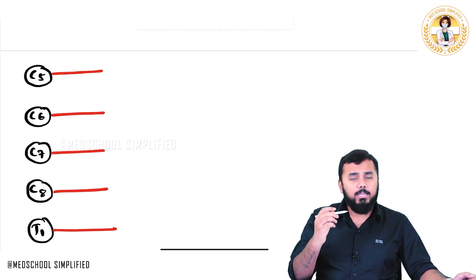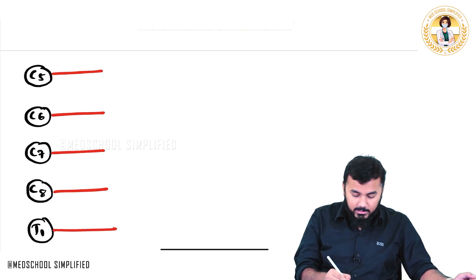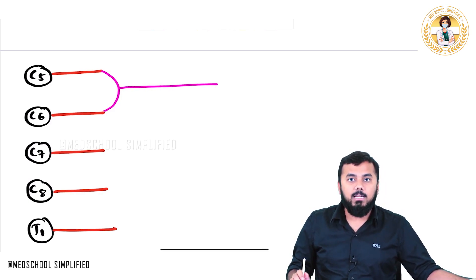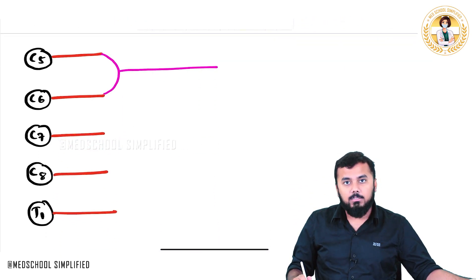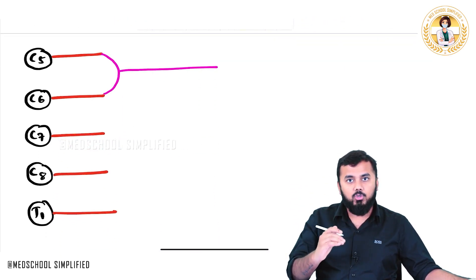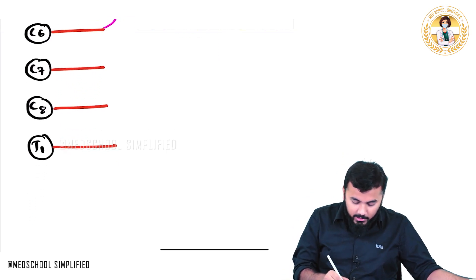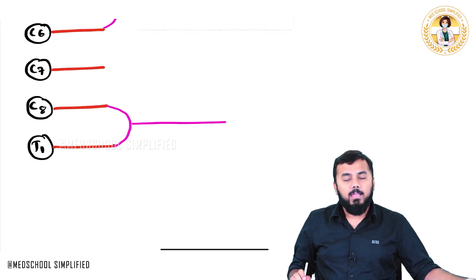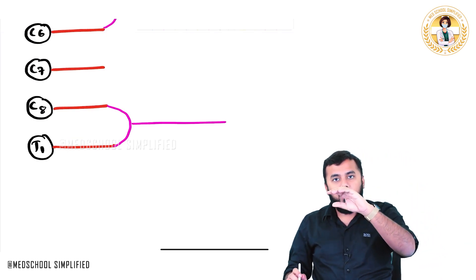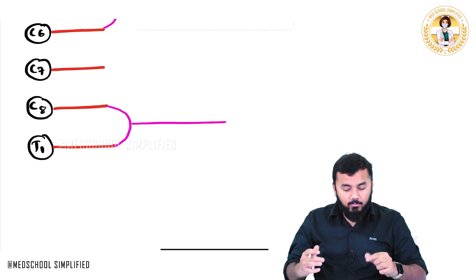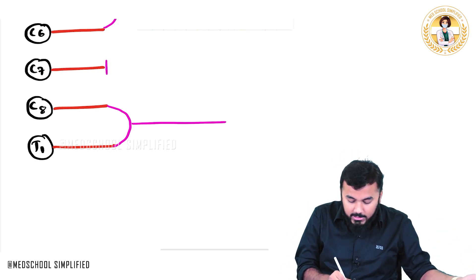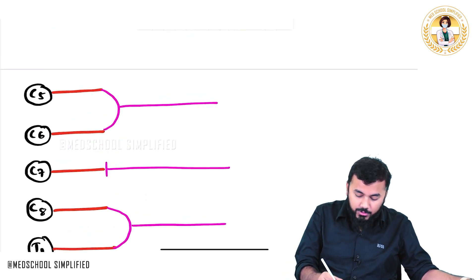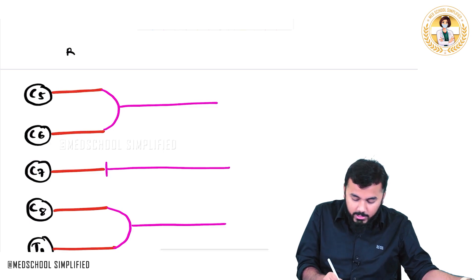The roots of C5 and C6 join together to form a trunk. C8 and T1 also join together to form a trunk. C7 is left alone and forms a trunk by itself. So after the roots, we have three trunks.